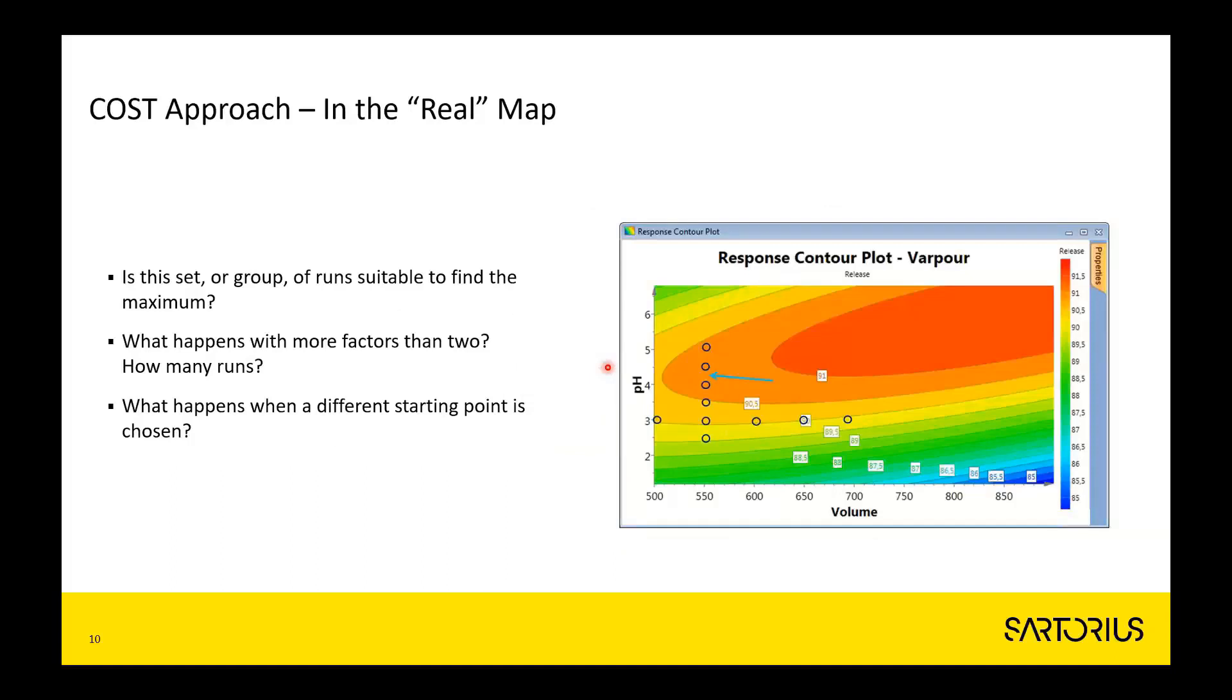If we take a bird's eye perspective and visualize what we have done in the real map, we have been told by our 11 experiments that the best condition is around where the arrow is pointing. In the real case, the optimal result is over here. So we have been fooled in some way—we have been misled to perceive that this is the optimum without that necessarily being the case. But the real optimum is over here.